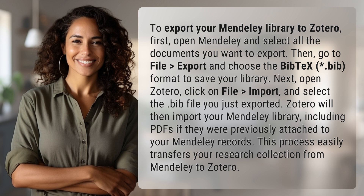Next, open Zotero, click on File > Import, and select the .bib file you just exported. Zotero will then import your Mendeley library, including PDFs if they were previously attached to your Mendeley records.